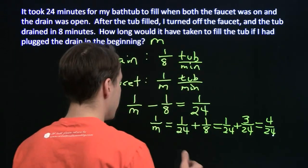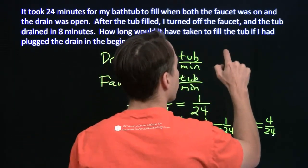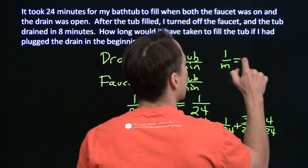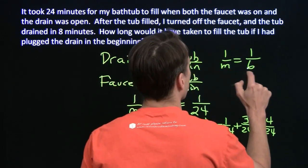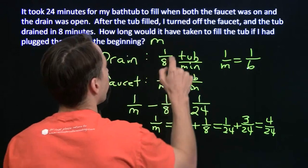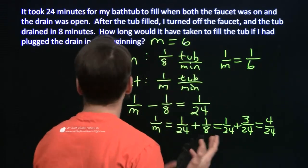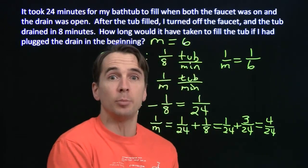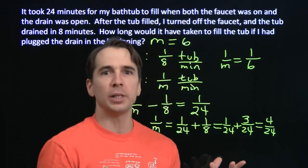So we can simplify that to one-sixth. Take out the common factor of four. So we have one over m equals one over six. So m is six. It would have only taken six minutes for the tub to fill if I'd plugged the drain at the beginning.